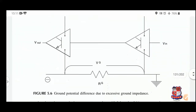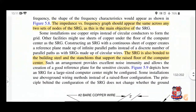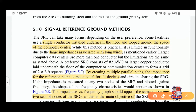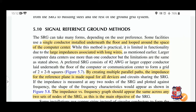Now let us look at the signal reference ground method — how we can construct the SRG. Normally it is a simple method: a single conductor installed underneath the floor, looped around the space of the computer center. One conductor is buried under the floor and connected around the whole computer area via loop wires. One problem is that as the length of this conductor increases, impedance increases, since R = ρL/A. As length increases, resistance increases, again causing noise problems for sensitive equipment.